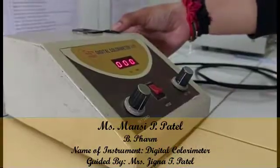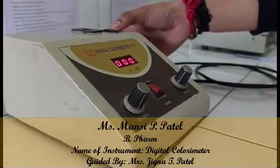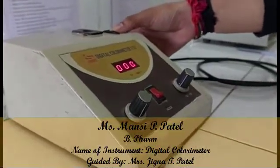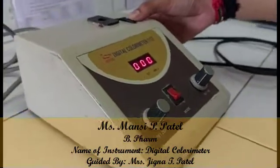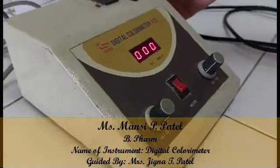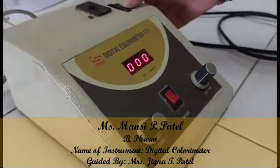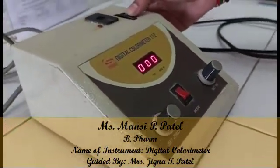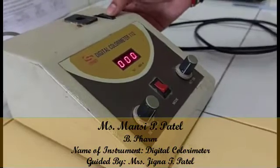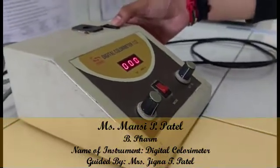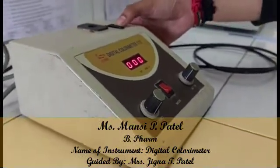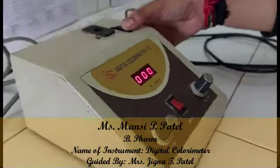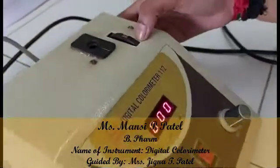Today I explain the colorimeter by demonstrating an experiment. The aim is to determine percentage W/W sulfanilamide by using a colorimeter, for which the wavelength is 530 nanometers. So I select the filter of 540 nanometers.